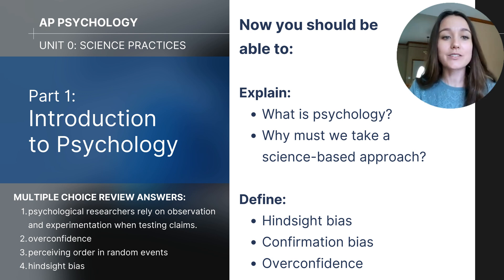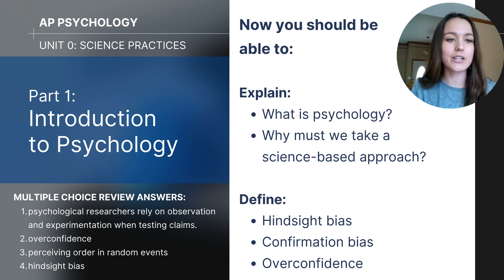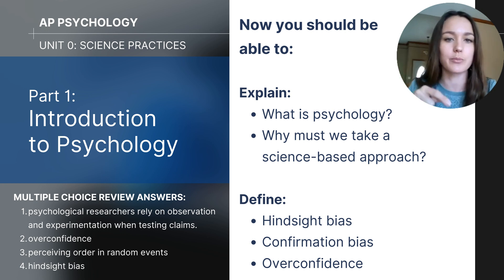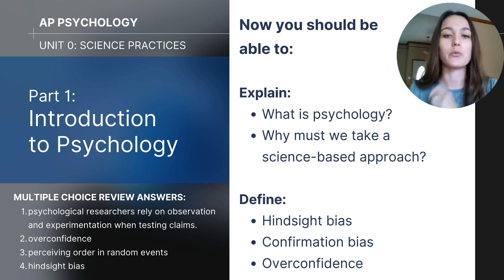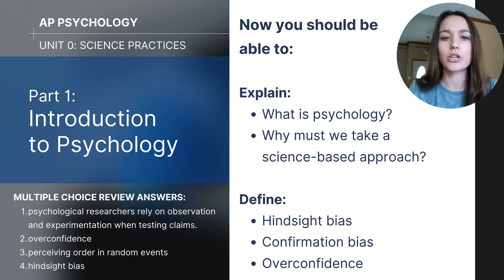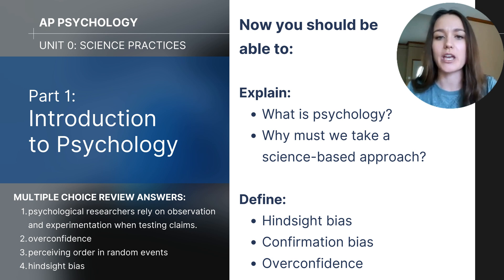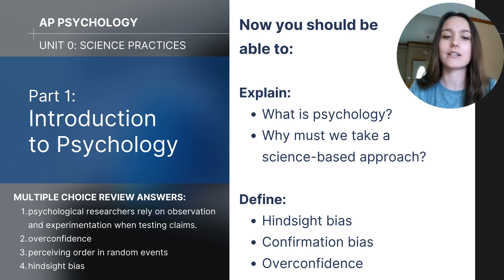This wraps up part one — Introduction to Psychology — of the Unit Zero Science Practices series. You can check your answers on the multiple choice questions below. You should now be able to explain what psychology is and why we must take a science-based approach, and define hindsight bias, confirmation bias, and overconfidence.